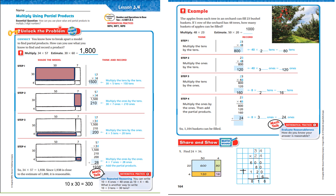How can you use place value and partial products to multiply two-digit numbers? I really like using the place value approach more than partial products, so I'm going to focus on that. Boys and girls, you have to know how to do this, but the place value method is much easier when multiplying two digits by two digits. It says you know how to break apart a model to find partial products — how can you use what you know to find and record a product?